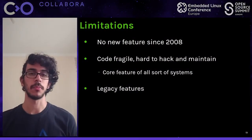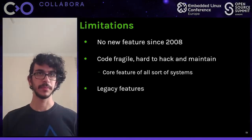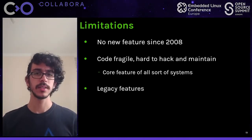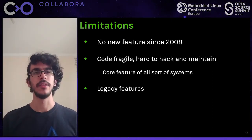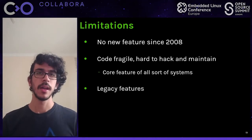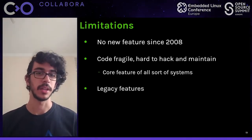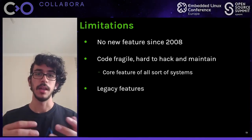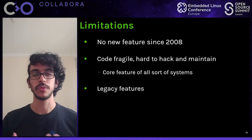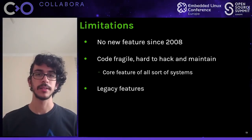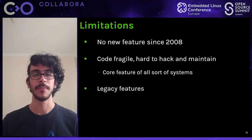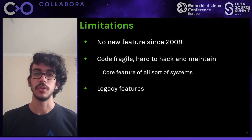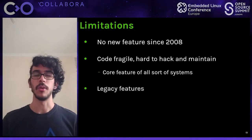Let's look at some problems the current interface has. The first thing to notice is that we haven't gotten any new features in Futex since 2008. This is because the code is very hard to modify and tricky to maintain — said by the maintainers themselves. Futex is very important for all sorts of systems and for safe multi-threading and locking, so any bug affects a lot of people. The current code also has legacy features nobody uses anymore, and it's tricky to add new features without breaking old ones.